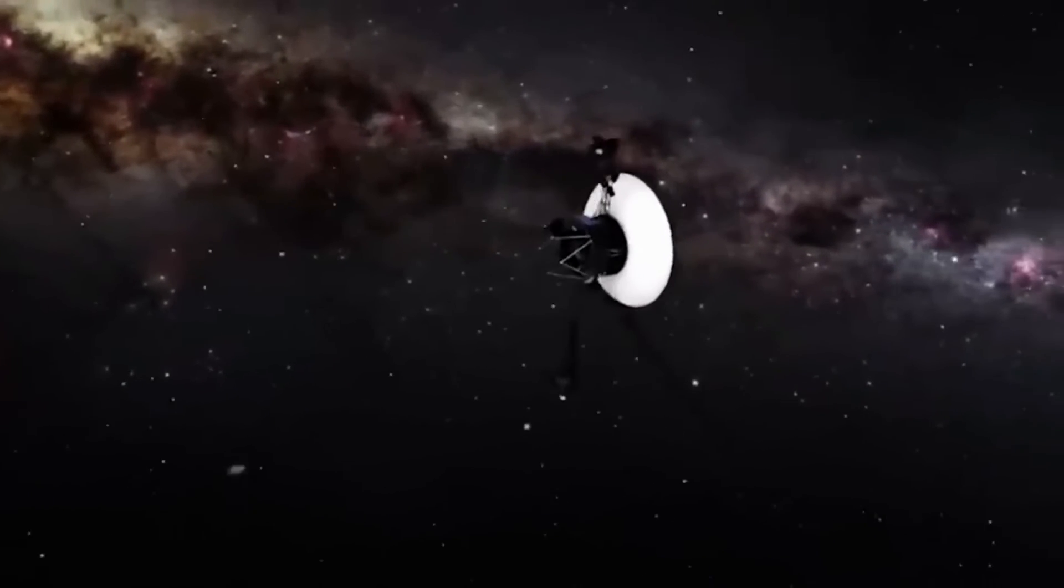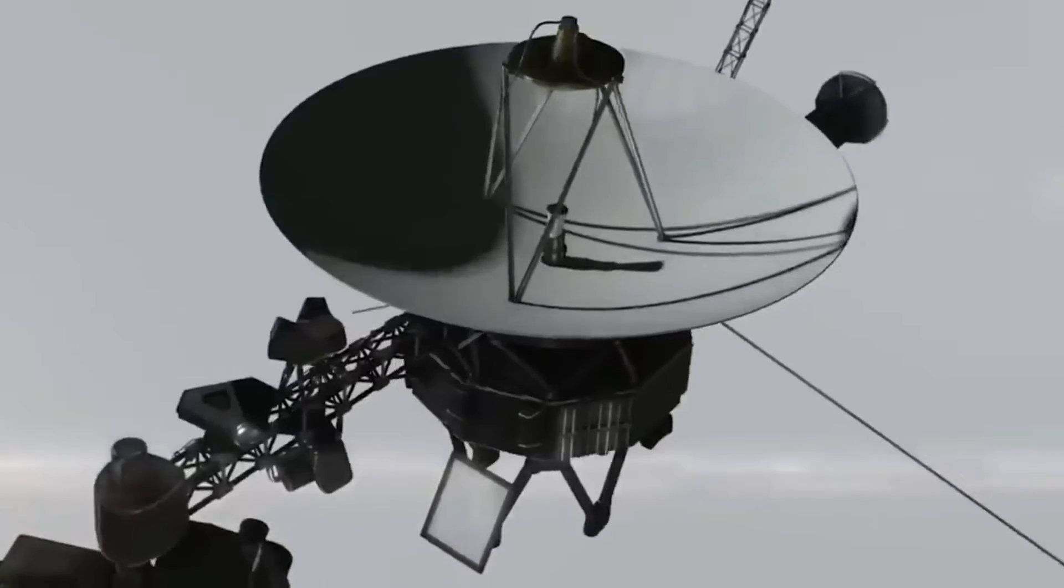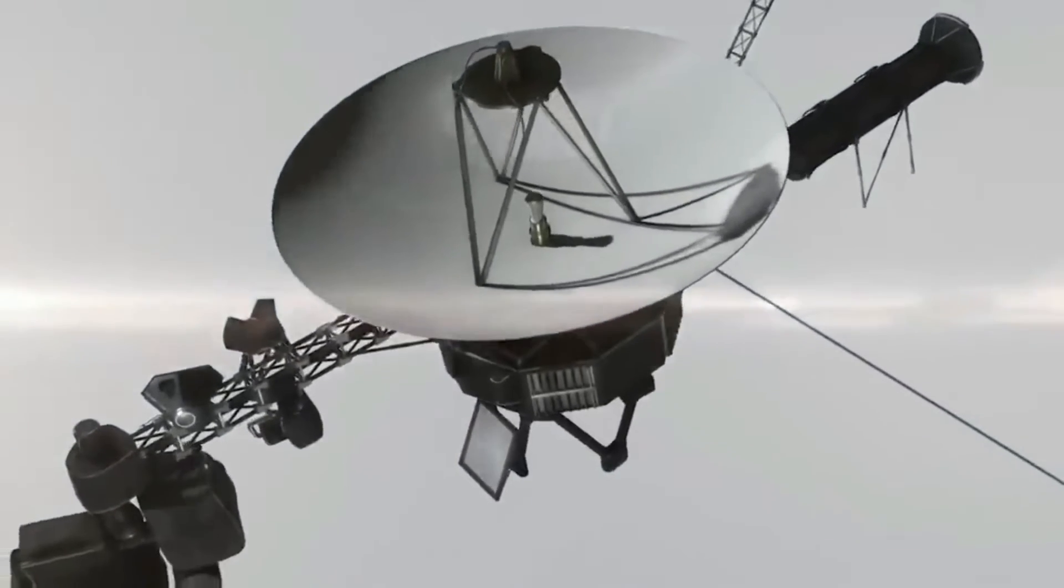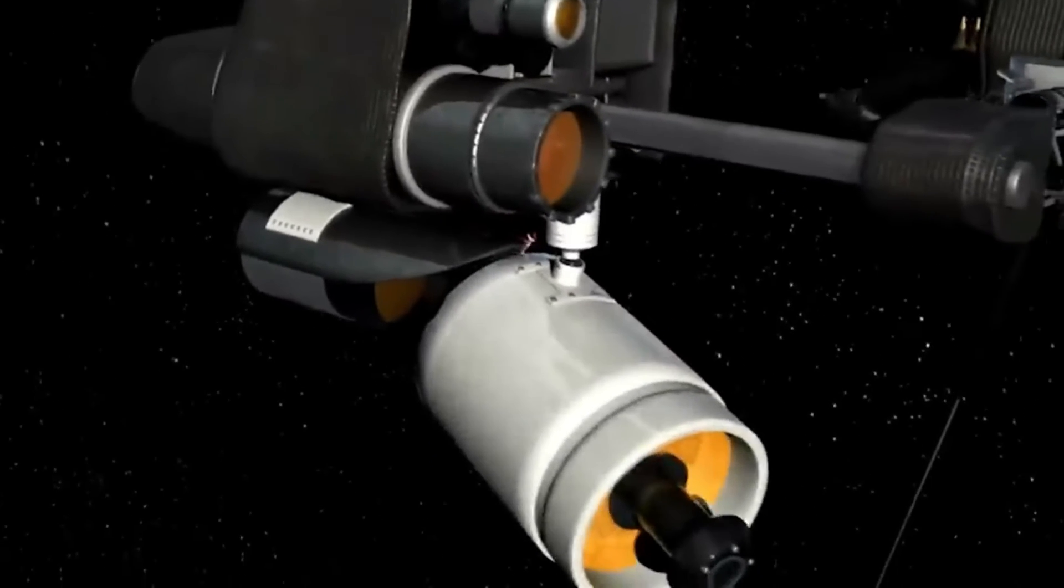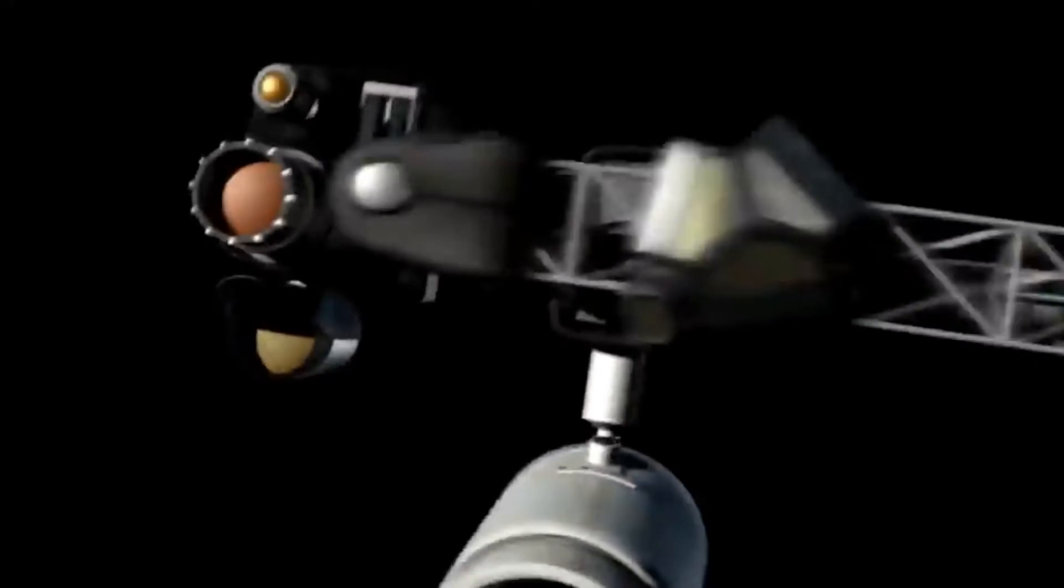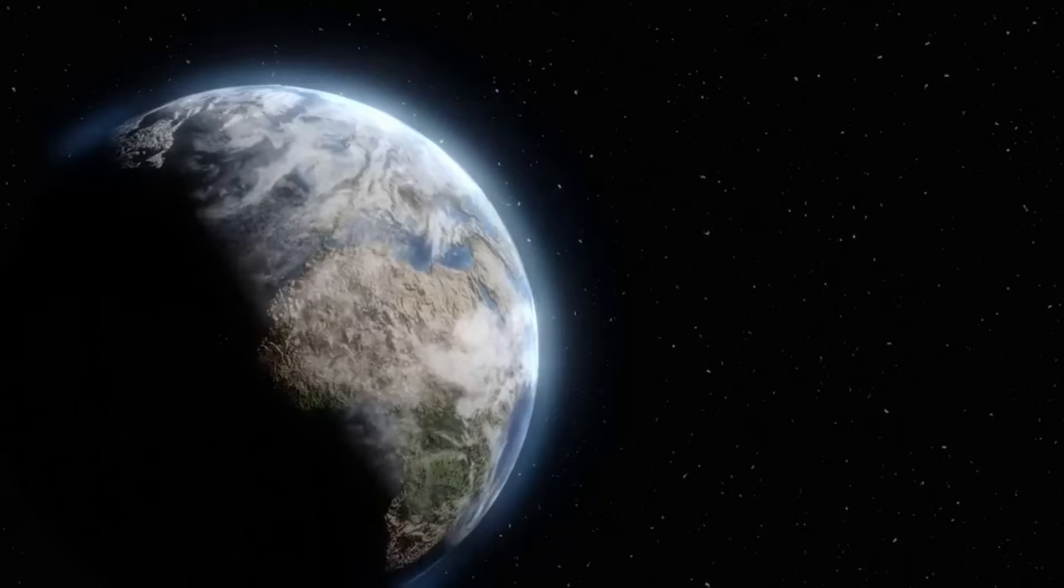In 2012, Voyager 1 became the first human-made object to explore interstellar space when it was 122 astronomical units away from the Sun. Voyager 2 soon followed in 2018 when it also entered interstellar space.